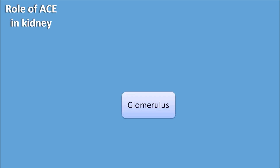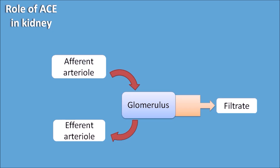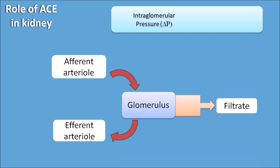Within the kidney, glomerular filtration is performed by the glomerulus, which is a network of capillaries. The glomerulus receives blood supply from the afferent arterioles, and after filtration the blood exits through the efferent arterioles. The filtrate then passes into the renal tubules, where it will ultimately be excreted as urine.